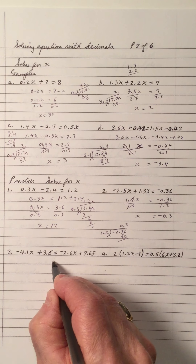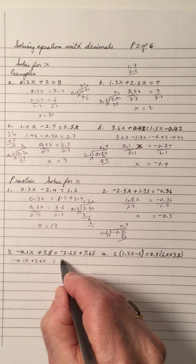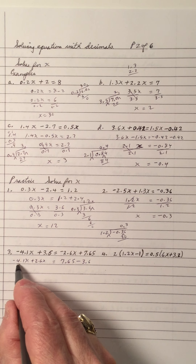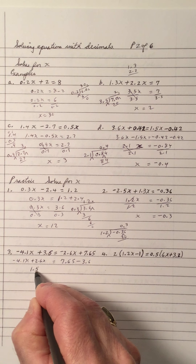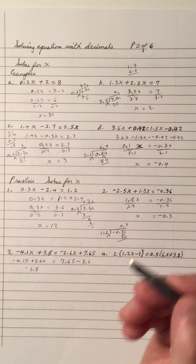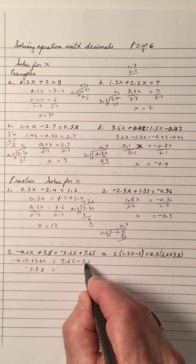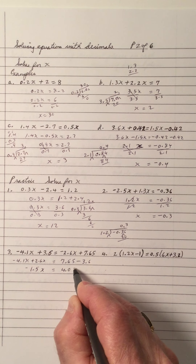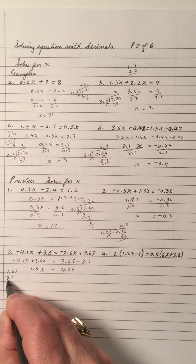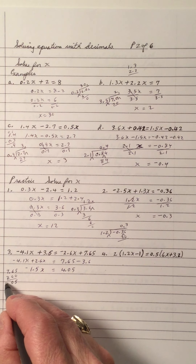Number 3. We have to move the x's to the left, so that's plus 2.6x. 7.65 subtract 3.6. When we subtract, it's like subtracting 41 from 26, so it's a 1.5 — and it's negative. If you say that's a 41 and a 26, you get a 15. So it's negative 1.5x. 7.65 and 3.6: 5 subtract 0 is 5, 6 subtract 6 is 0, 4 subtract 3 is... so we get 4.05.